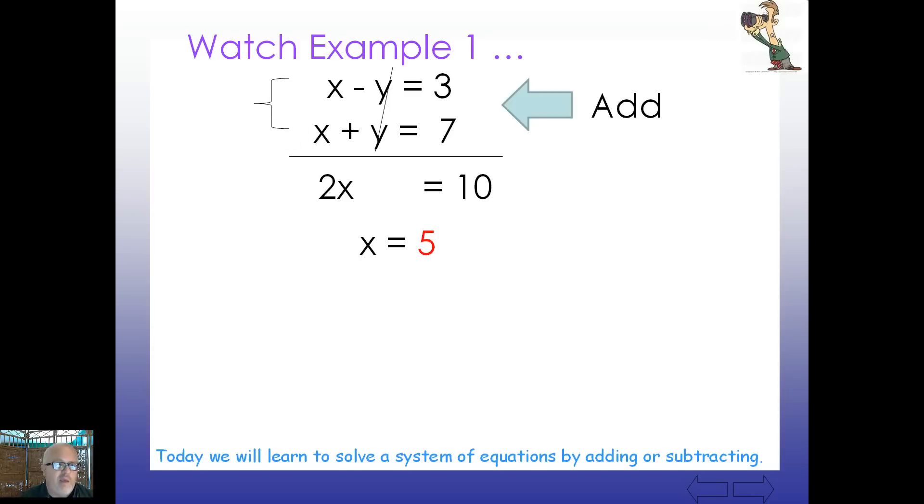I'm going to choose this one. And I'm simply going to say 5 plus what is 7? Well, we know that, of course, to be 2. And are we not done? There's your ordered pair, 5, 2. Solving by elimination.